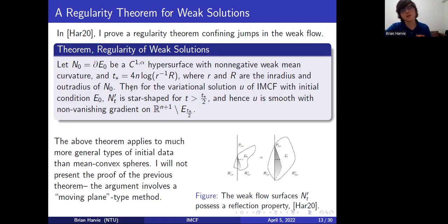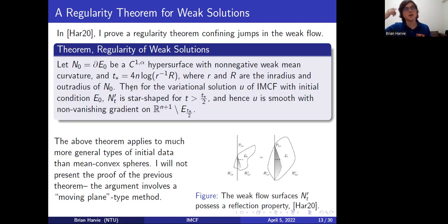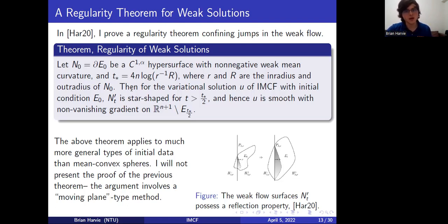If you're interested in this theorem, the main ingredient is a moving plane method. Some of you might be familiar with the moving plane method for constant mean curvature hypersurfaces in ℝⁿ⁺¹. There's a parabolic moving plane method for flows that was originally developed by Bennett Chow and Robert Gulliver. Basically in my paper I applied these techniques to variational solutions.